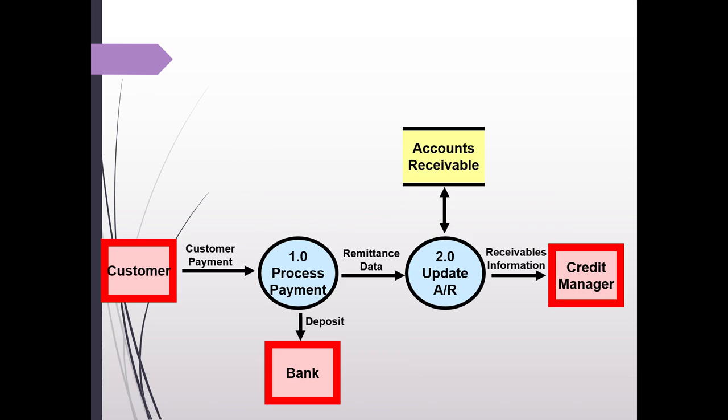So in our data flow diagram we looked at earlier, we can see that there is a data source of customer and we have two data destinations, the bank and the credit manager. The bank receives the deposit and the credit manager receives the receivables information.